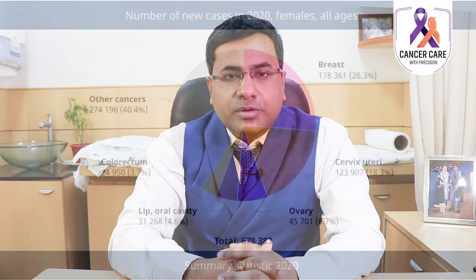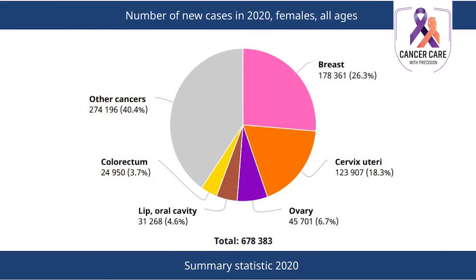According to Globocan data 2020, it is the second most common cancer in women after breast cancer. In 2020, there were about 1.24 lakh new cases of cervical cancer in India, which comprises about 18 percent of all cancers, and there were about 77,000 deaths from cervical cancer, comprising about 9 percent of all cancer deaths.